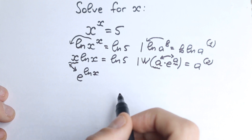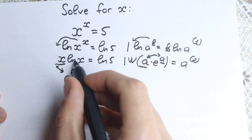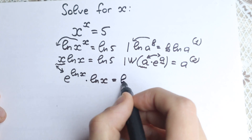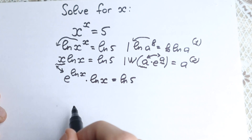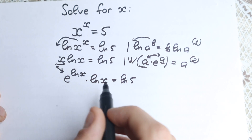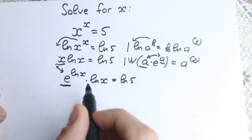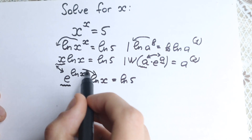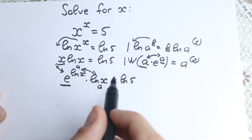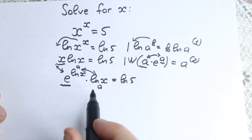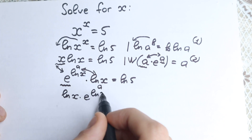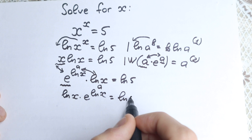So now we have e to the power natural log x, times natural log x, equal to natural log 5. Look at this compared to the Lambert W definition: we have a times e to the power a. We have e here, and we have the same expression — natural log x — appearing in both places, just in different order. We just need to swap the order slightly, giving us: natural log x times e to the power natural log x equals natural log 5.